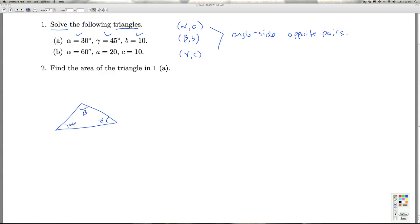The length of the side opposite the angle alpha is A. The length of the side opposite angle beta is B. And the length of the side opposite angle gamma, I'm going to call C.